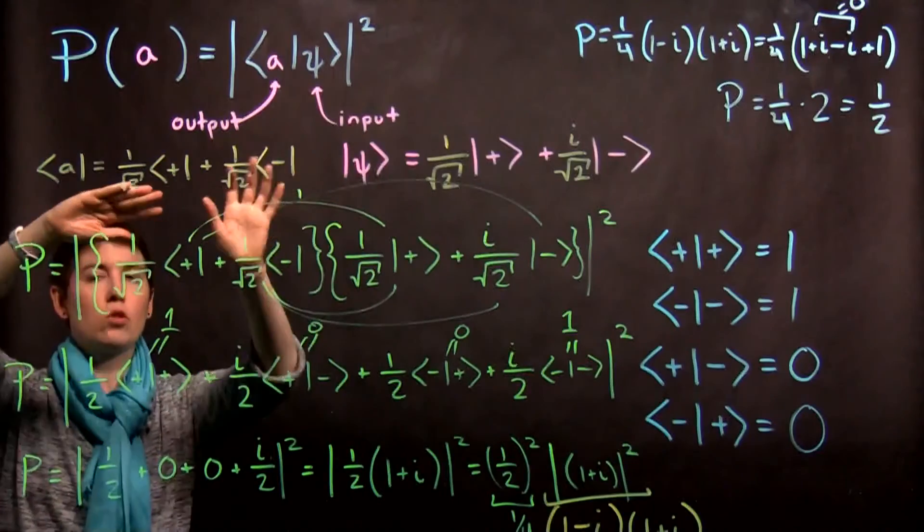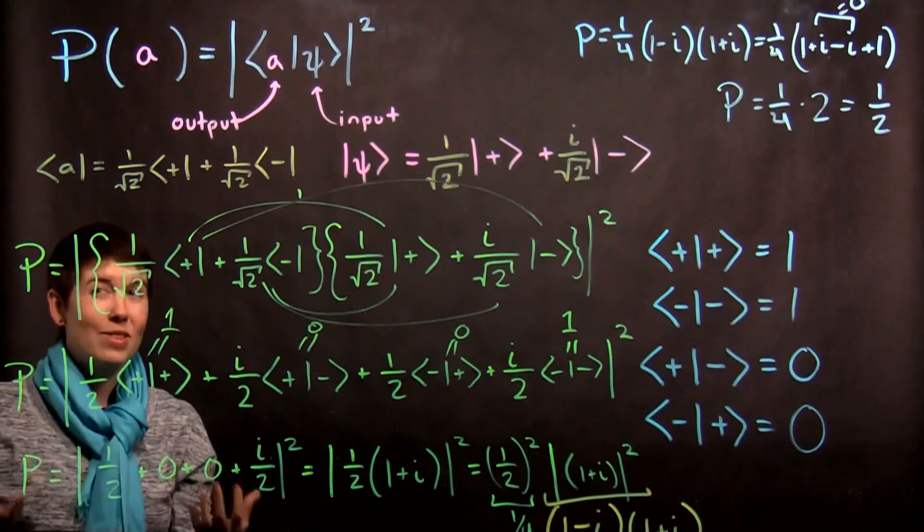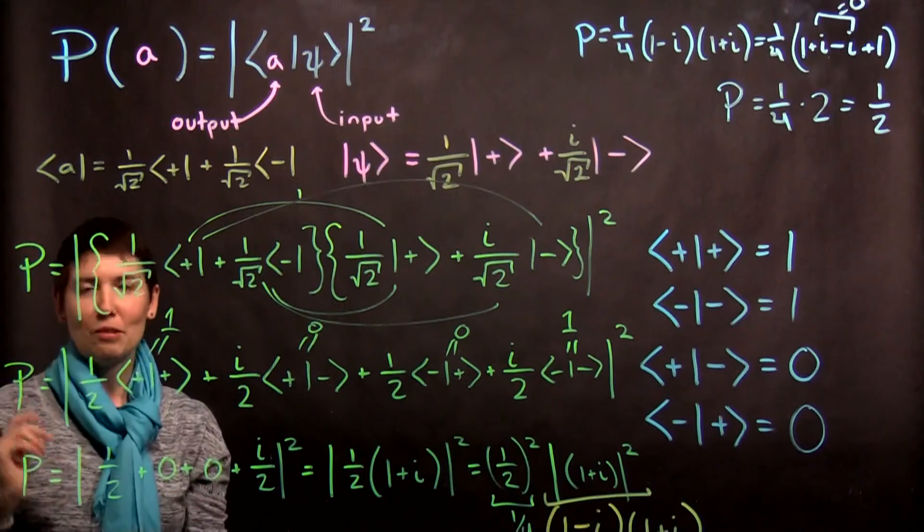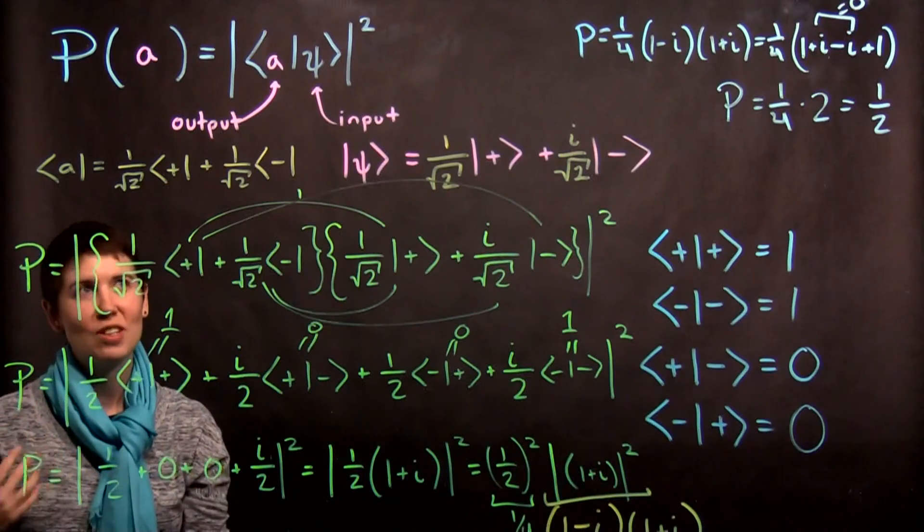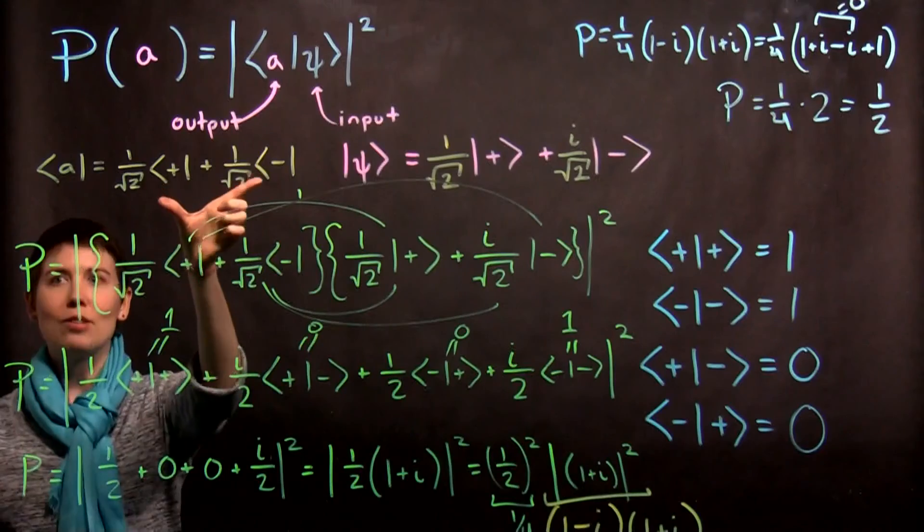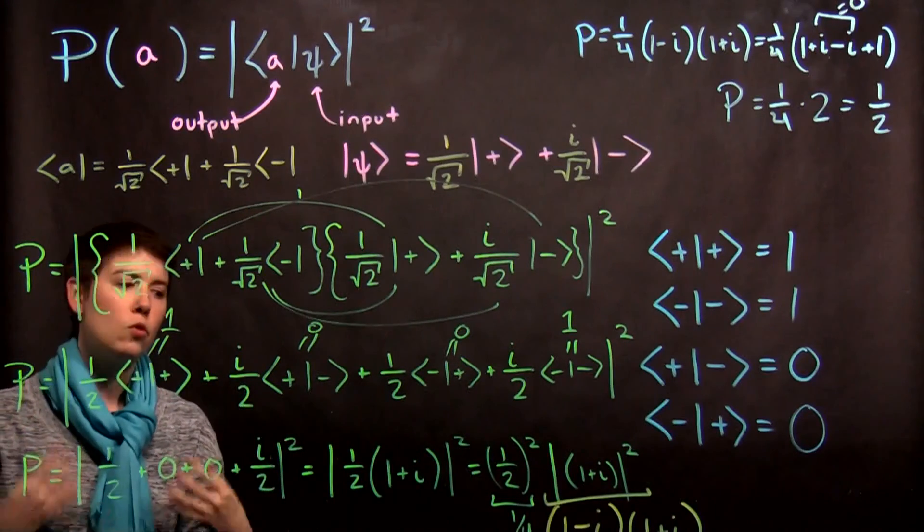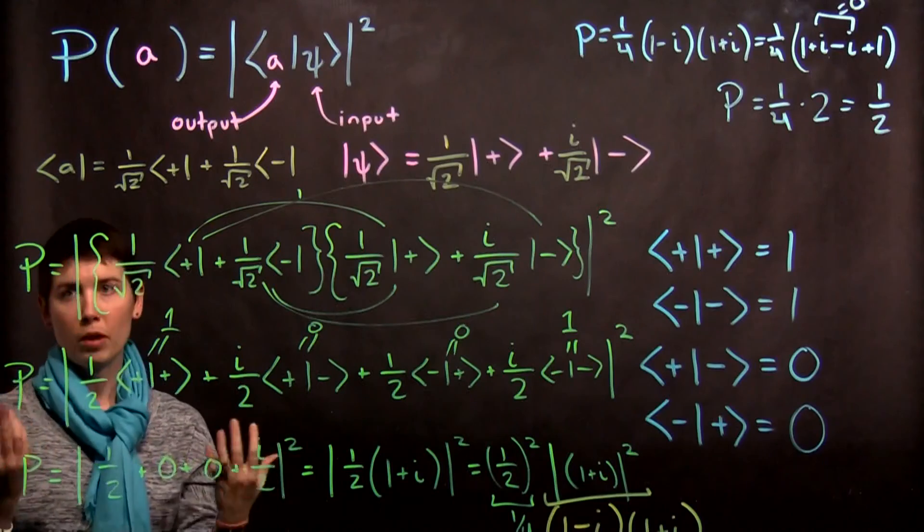Where is the other 50%? Well, that gets a little more complicated, but the answer is there would be a state orthogonal to this that would be the other 50% probability of measurement. But usually, when we're thinking about quantum systems, we can just think about one at a time.